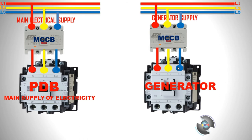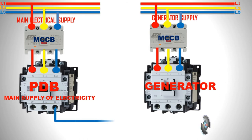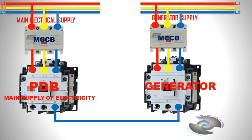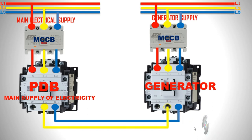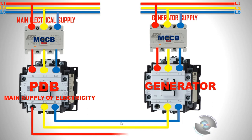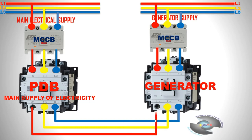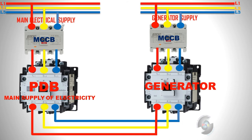Now I want to connect the power sections from the generator to the PDB. The R-Y-B phases are connected one by one — each single phase is connected in the R-Y-B section. Step-by-step processing is shown here, completing the generator-to-PDB system connection.